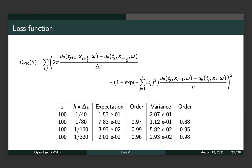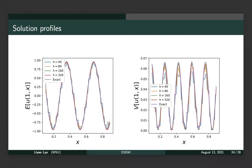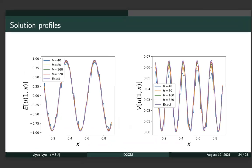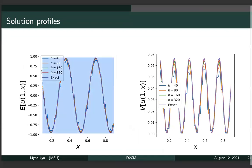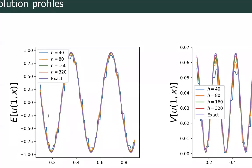Even when there are 100 random variables, we still obtain accurate results. The magnitude of the error in the expectation and the variance is about 10^{-2}. The solution plot shows that the purple line is the exact solution; the left panel shows the expectation and the right shows the variance. When the grid is fine, the red line gives very good results.